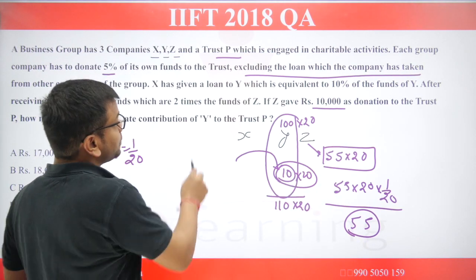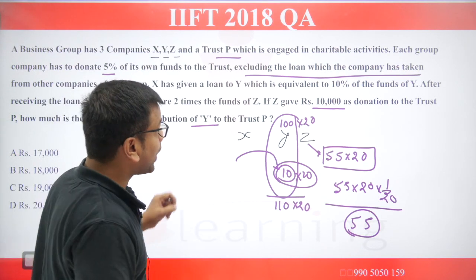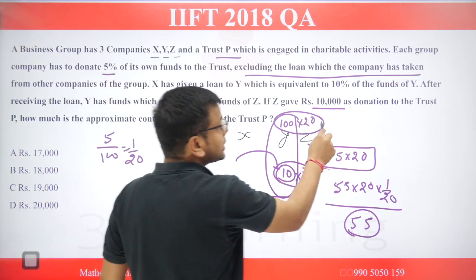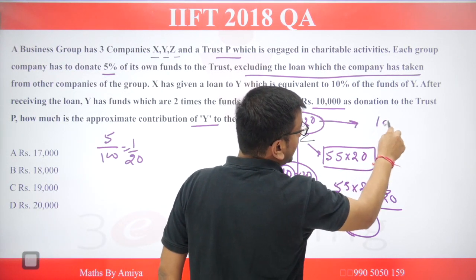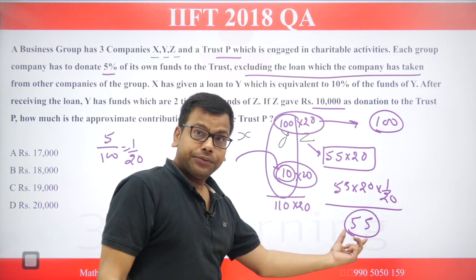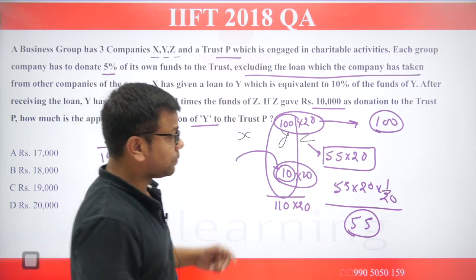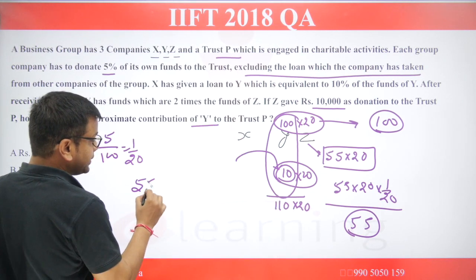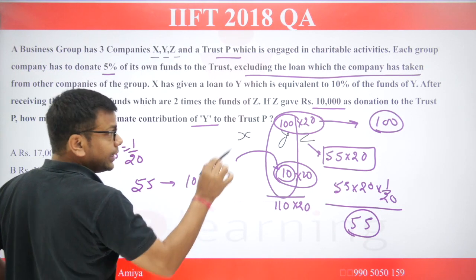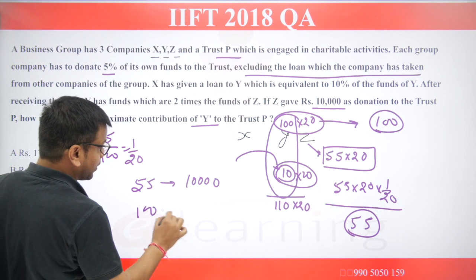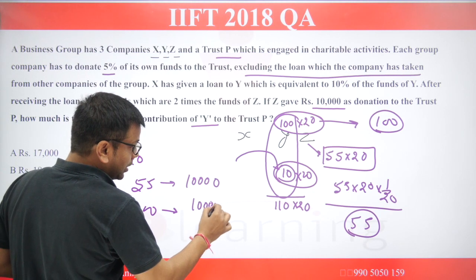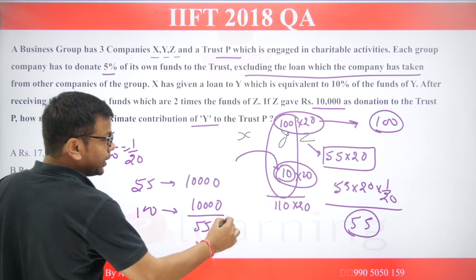How much is the approximate contribution of Y to the trust? Y also contributes 1 by 20 of its funds, meaning Y contributes 100 rupees on its funds. Now I need to solve the question. If G contributes 55 on 10,000, and we need Y's contribution of 100, we set up the proportion: 1 value equals 10,000 divided by 55.